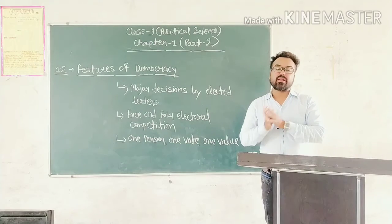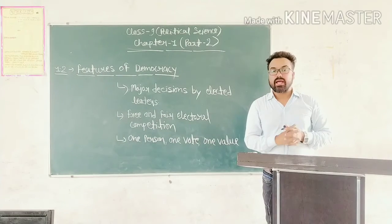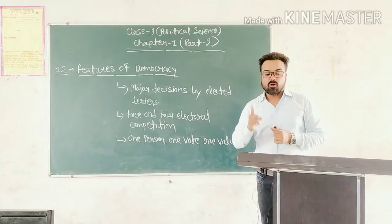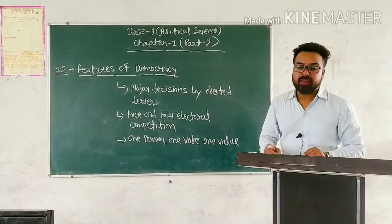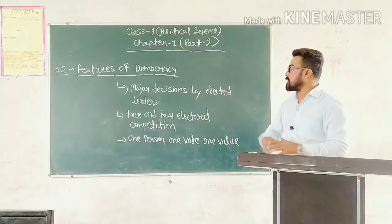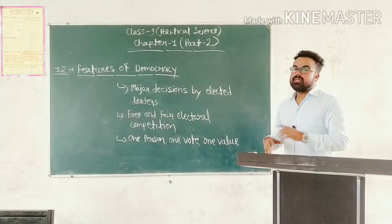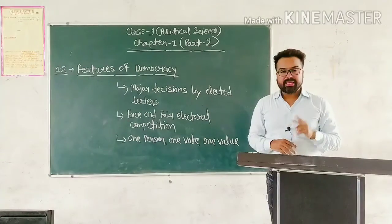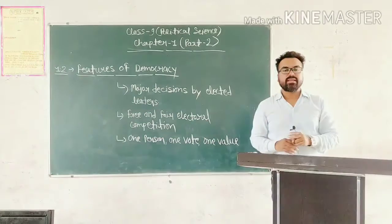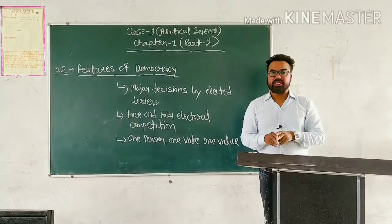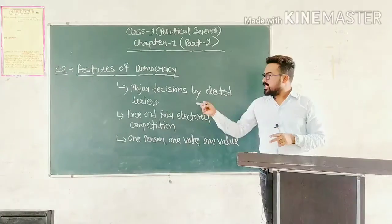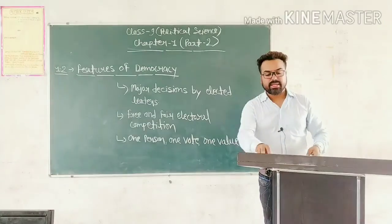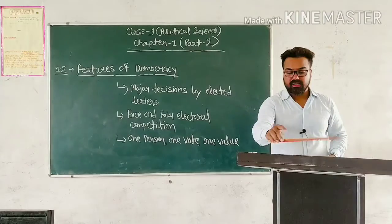So the first feature of democracy is: in a democracy, the final decision-making power must rest with those elected by the people — final جو power ہے وہ ان کے پاس ہونی چاہیے جنہیں لوگوں نے چنا ہو، جنہیں لوگوں نے اپنا representative بنایا ہو۔ Now the next feature: free and fair electoral competition. یہاں پر دو دیشوں کی story پڑھیں گے — چین اور میکسیکو۔